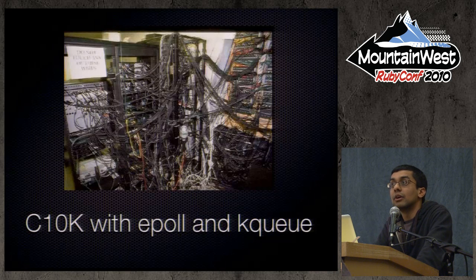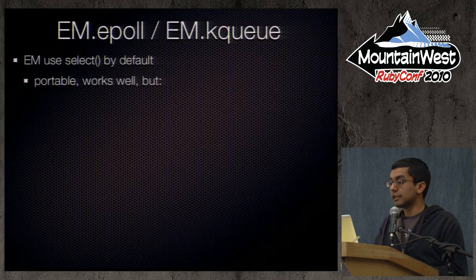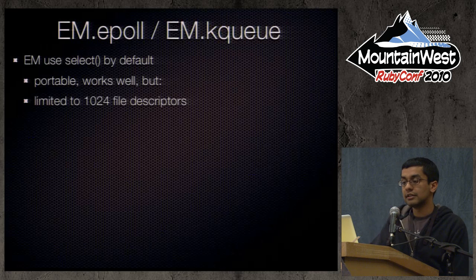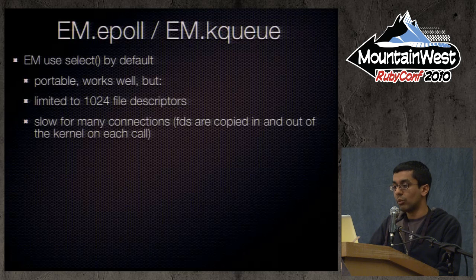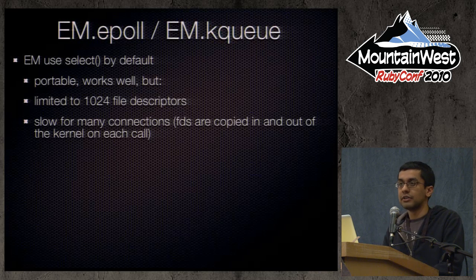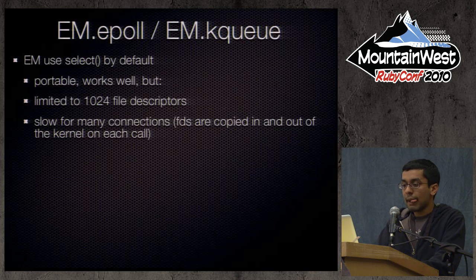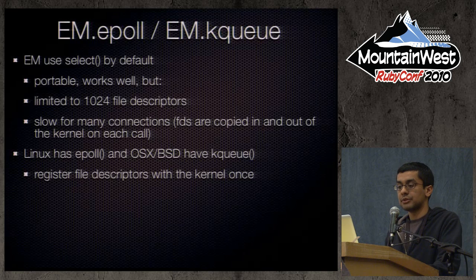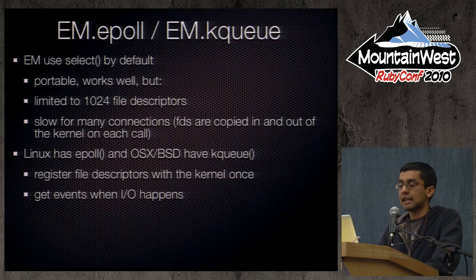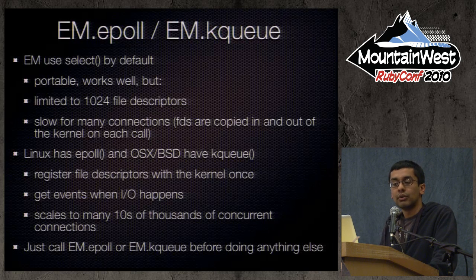We touched on epoll and kqueue. Event Machine uses IO.select by default. Select is very portable — it works on Windows — but has limitations: by default limited to 1,000 open file descriptors, and it doesn't scale well since it gets slower as you add connections because you pass the entire list into the kernel every time. The alternative that lets you scale to 10,000 connections is epoll on Linux, and kqueue on OSX and BSD. Internally it's different — you register file descriptors once up front and then just get events as they happen. To use these in Event Machine, before calling EM.run, simply invoke EM.epoll or EM.kq based on your platform.